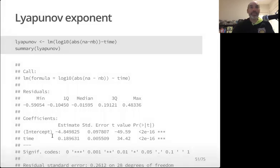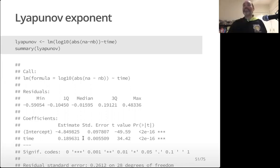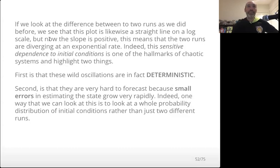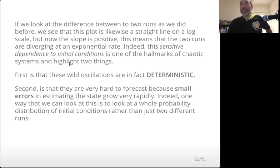We see a positive Lyapunov exponent in this case — about 0.19. In the stable domain, two populations starting from different initial conditions have a negative Lyapunov exponent and converge at an exponential rate. In the chaotic domain, they have a positive Lyapunov exponent and diverge at an exponential rate. This is what is called sensitive dependence on initial conditions, and in many ways that is one of the defining characteristics of chaotic systems.